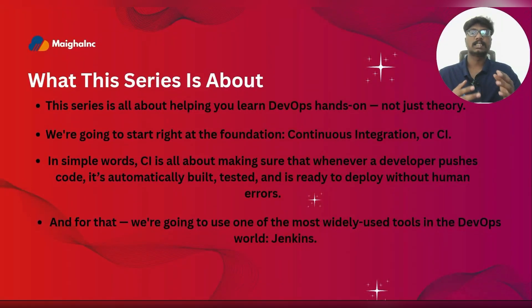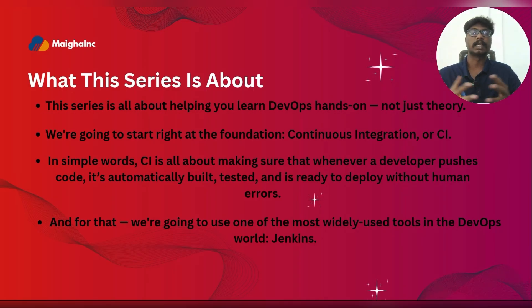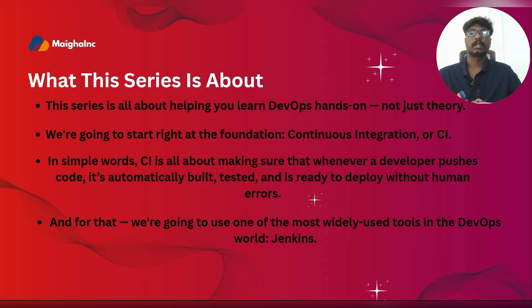So what exactly is this series about? This entire series is designed to help you learn DevOps in a hands-on way, not just theory. We are starting from the very beginning foundations, which is something called continuous integration, or just CI. CI means every time a developer writes code and pushes it to the shared repository, that code is automatically built, tested, and prepared for deployment without manual steps.